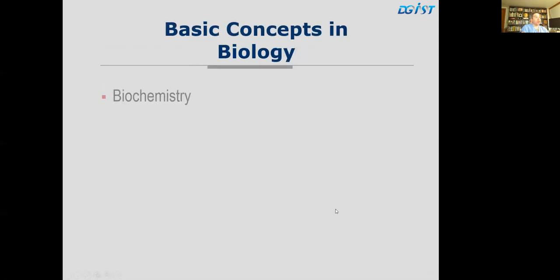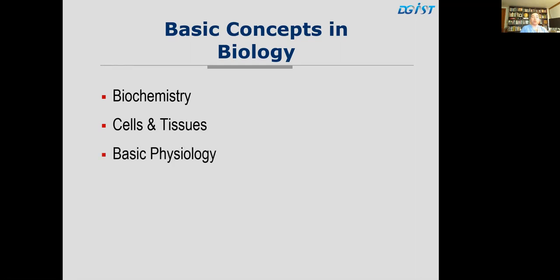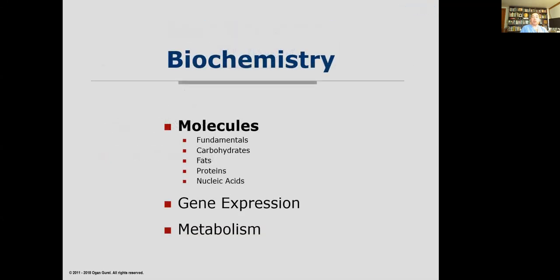Now let's go to today's topic: basic concepts in biology. We have quite a lot of slides so I'll go fairly quickly, but the point is to provide a review. We'll talk first about biochemistry, then cells and tissues, then basic physiology. In terms of biochemistry, we'll discuss basic molecules because a lot of electromagnetic interactions with biology occur at the level of molecules. We'll discuss the fundamentals of organic chemistry and biochemistry, covering four types of molecules: carbohydrates, fats, proteins, and nucleic acids.